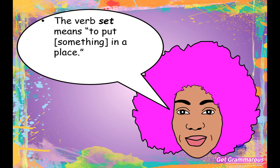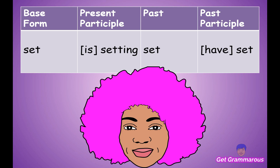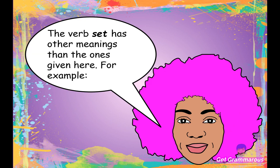The verb 'set' means to put something in a place. Set generally takes an object. The base form is 'set,' the present participle is 'setting,' the past tense is 'set,' and the past participle is 'have set.' Set is an irregular verb, meaning it doesn't change form in any of the tenses: set, set, set.